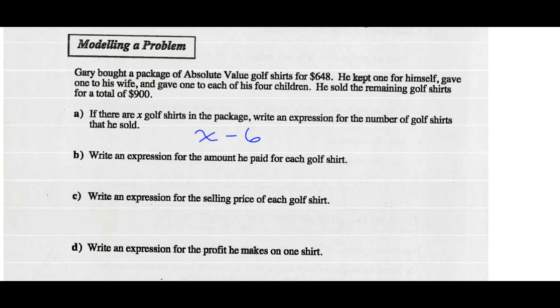Write an expression for the amount that he paid for each golf shirt. Well, he bought all the golf shirts for $648 and there were X of them, so 648 divided by X.